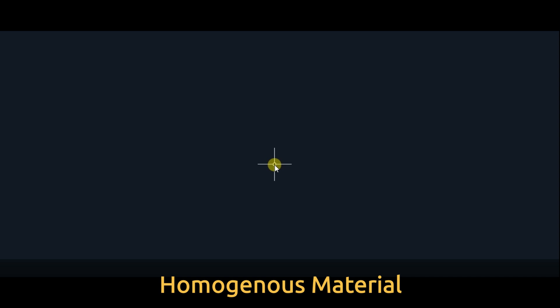Hello viewers. In strength of materials or structural applications, we will generally see a term called homogeneous materials. Let us see what is homogeneous material. In the theory, what it says is, if the property of a material at every point is same, it is called as a homogeneous material.